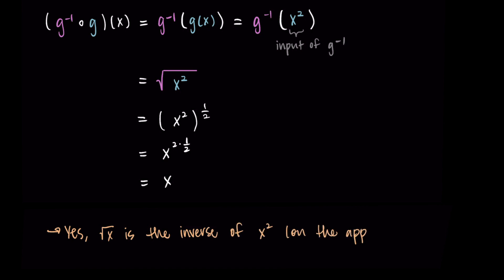Remember, this is assuming we're on the appropriate domain, which we'll see more of in the next video. That's just a little bit about how you can use this property of inverses to confirm that a function is in fact the inverse of another one. That's it for this one — thanks so much for watching, and I will talk to you in the next one.